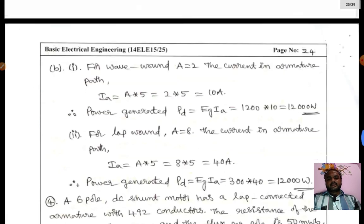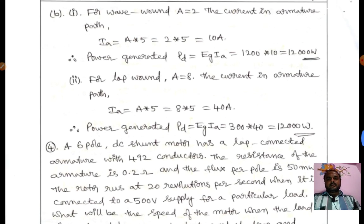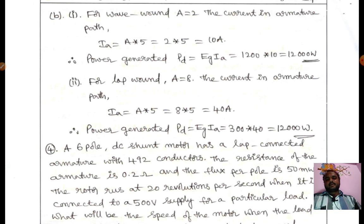Coming to the power for wave wound: Ia = 2 × 5 = 10 amperes. Power developed Pd = Eg × Ia = 1200 × 10 = 12,000 watts.